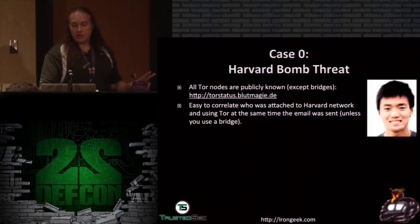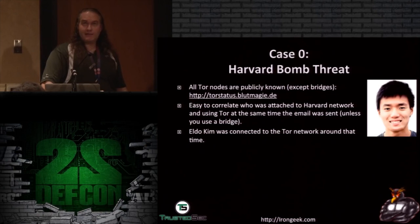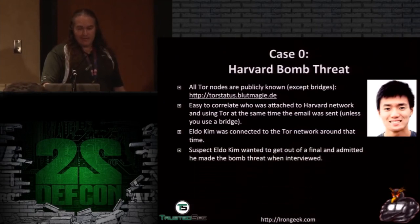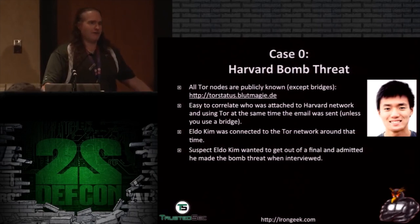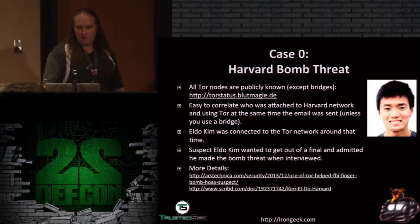However, he did it from the university network. So they found this guy named Elder Kim — he was one of the few people on Tor at the time on Harvard's network. When they found he was one of them and went and talked to him, he admitted to everything. Apparently he sent in the bomb threat because he wanted to get out of a final exam. So he sent that in and is in huge trouble just to get out of a final. Oh well.